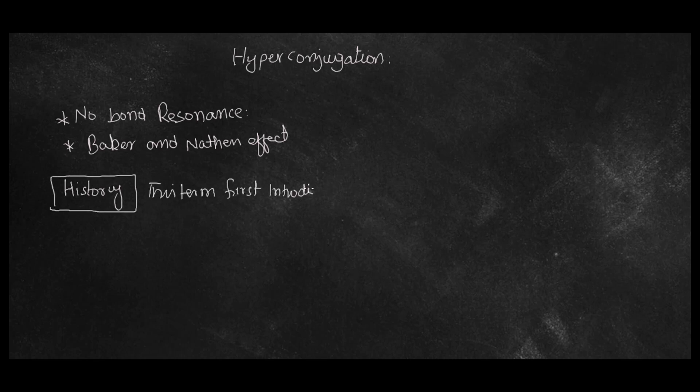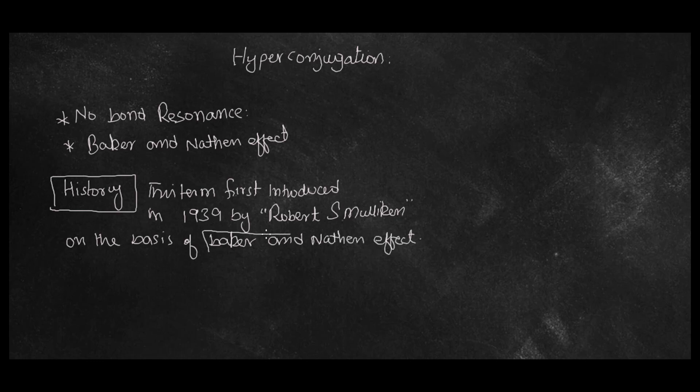Hyperconjugation is also known as no-bond resonance or Baker and Nathan effect. The history is, this term was first introduced in 1939